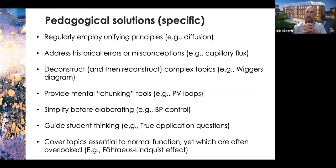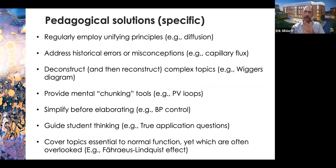Addressing historical errors or misconceptions — over the years of our teaching and studying physiology there are places where you find what I call historical inertia: things that have not evolved with changes in the current literature. I'll use capillary flux as an example a little later on. Another tool we use is deconstructing and then reconstructing complex topics — the Wiggers diagram is a good example there, which shows the electrocardiogram, pressure traces, and volume traces for the cardiac cycle.